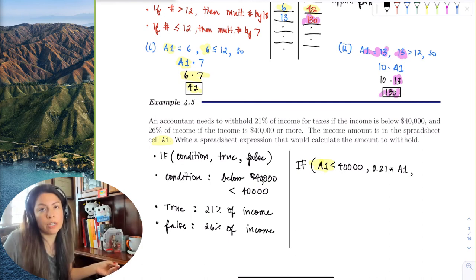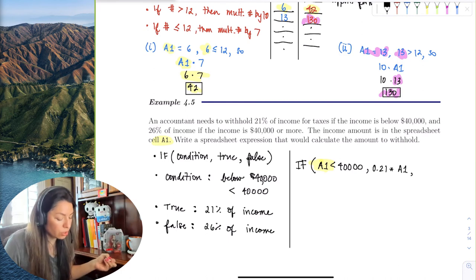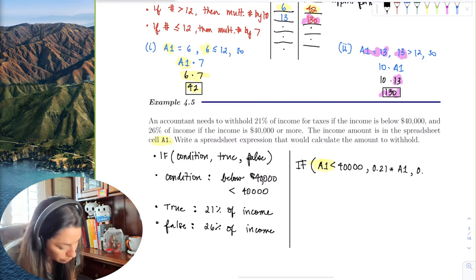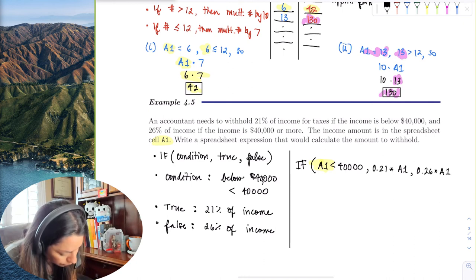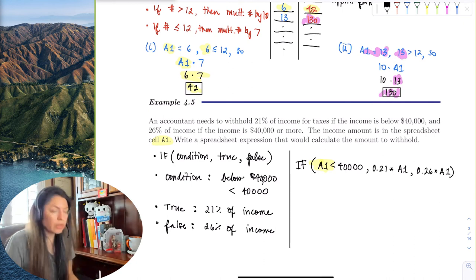If it's false, meaning that your income is greater than $40,000, then we would multiply by 26%.